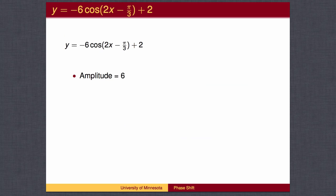Here is a full example. It is a cosine wave, so our instinct is to follow the pattern top, middle, bottom, middle, top. Except this cosine wave has a negative sign in front, which flips the graph top to bottom, so it will go bottom, middle, top, middle, bottom. It has an amplitude of 6.